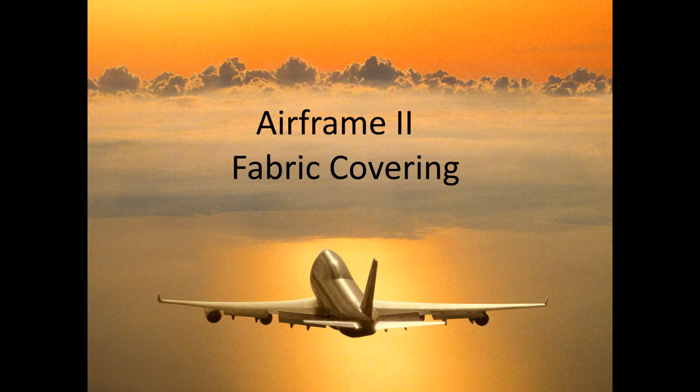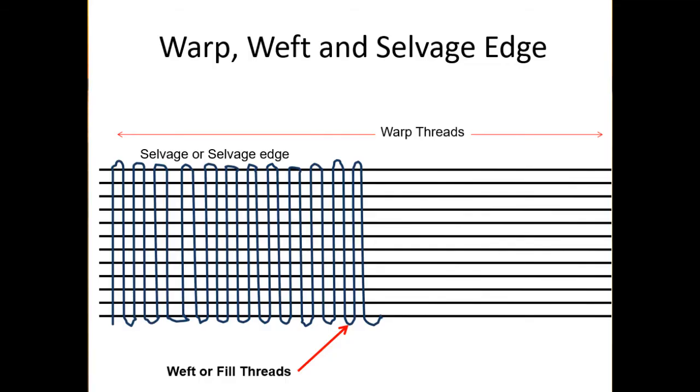Here are some glossary terms: calendaring, nap, mercerization, warp — threads that run the length of the fabric — and the weft, woofer, or fill, which run 90 degrees to the warp threads. Some slides explain how that lays out.